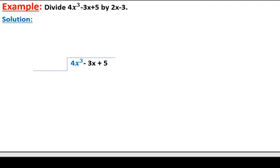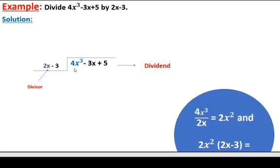4x³ minus 3x plus 5 is the dividend and 2x minus 3 is the divisor. When you divide any two polynomial functions, you always consider the leading term of the dividend and the leading term of the divisor. The leading term of the dividend is 4x³ and the leading term of the divisor is 2x. Dividing 4x³ by 2x: 4 over 2 is 2, and x³ over x is x², so the quotient is 2x².